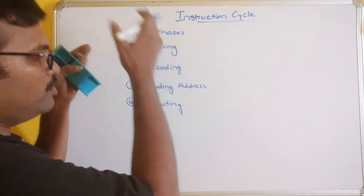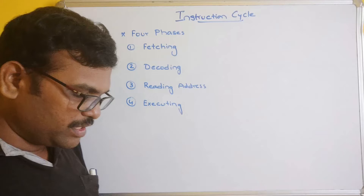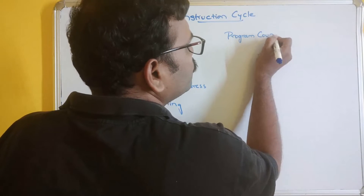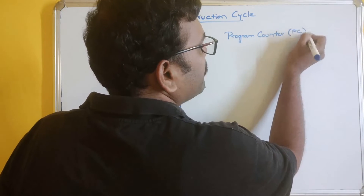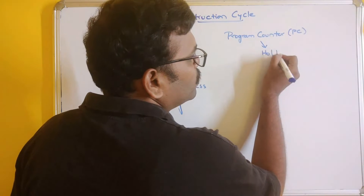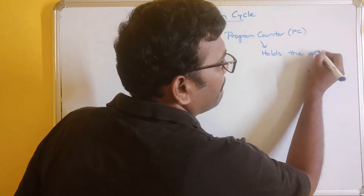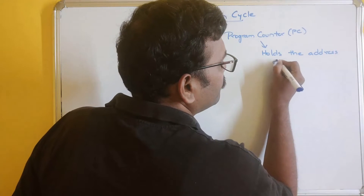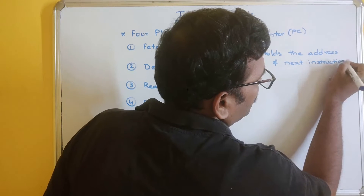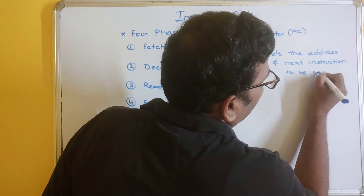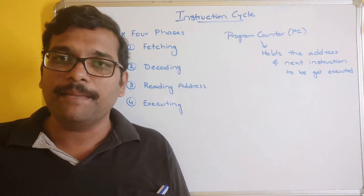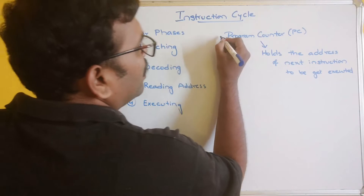Before going to these phases individually, we'll see a few key concepts. First is the program counter, usually represented as PC. This is a register which holds the address of the next instruction to be executed.